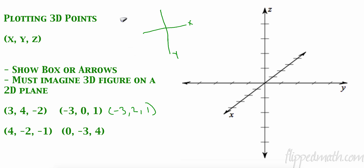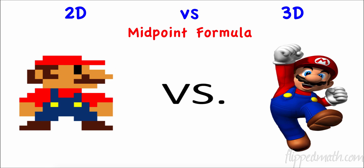Let's try (0, -3, 4) with the arrow method. Zero on x — I don't go front or back. Negative three on y, then straight up four — and there's my point. You can use either method. Personally I like the box method because it shows the three dimensions a little better, and that's what I'll use on answer keys.